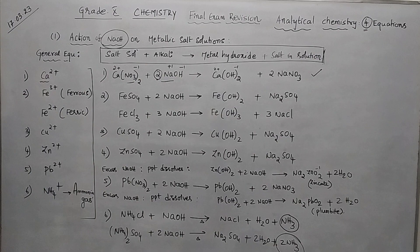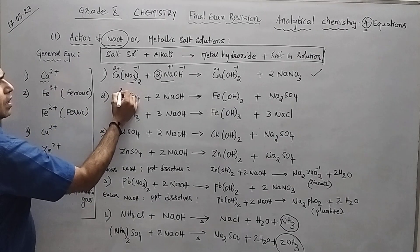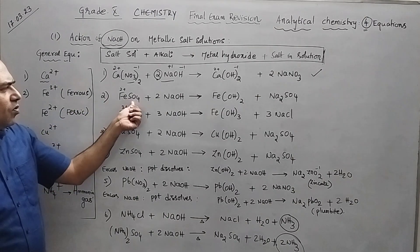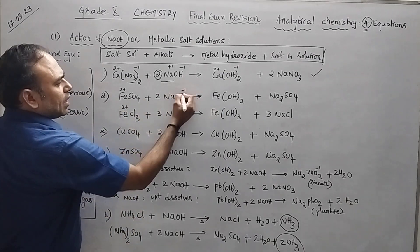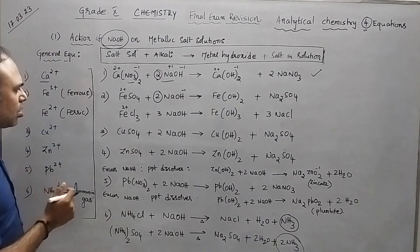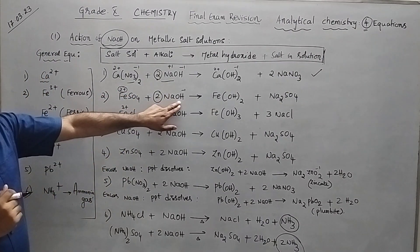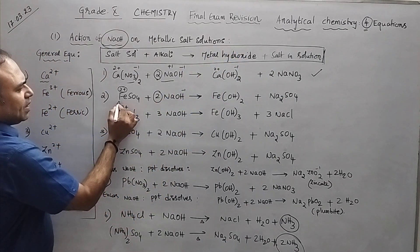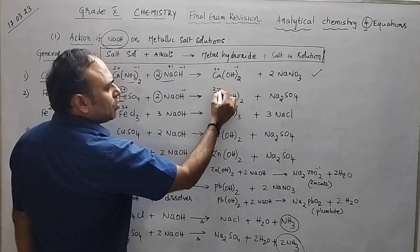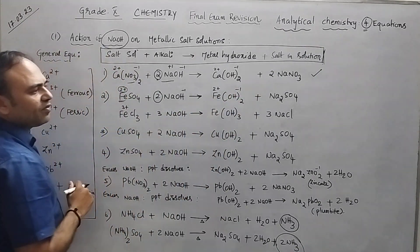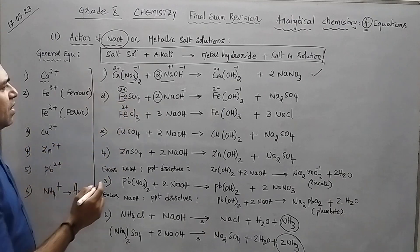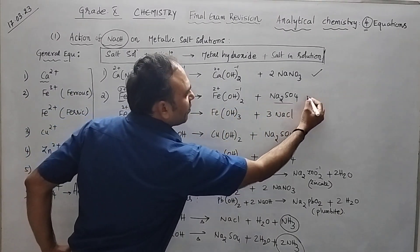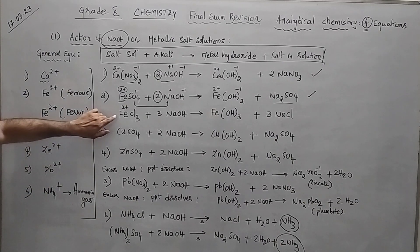Second equation: ferrous is 2+ and ferric is 3+. Take FeSO₄ — again, why 2 moles of NaOH? Because you have a 2+ positive charge here, so you need 2 negative charges. Your metal hydroxide is Fe(OH)₂. The remaining ions are Na⁺ and SO₄²⁻, which give you sodium sulfate. Second equation understood.